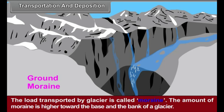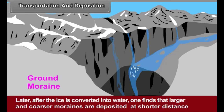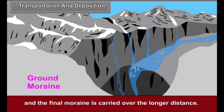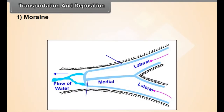Transportation and Deposition: The load transported by glaciers is called moraine. The amount of moraine is higher towards the base and the banks of a glacier. Later, after the ice is converted into water, one finds that larger and coarser moraines are deposited at shorter distances and the finer moraine is carried over a longer distance. The following landforms are formed by the depositional work of glaciers. See figure 9.10.